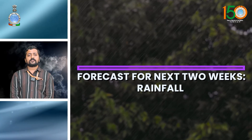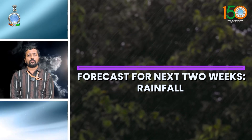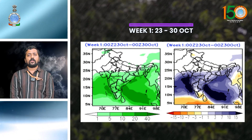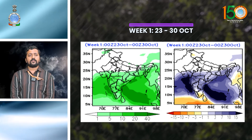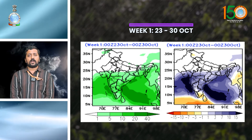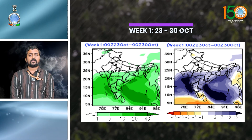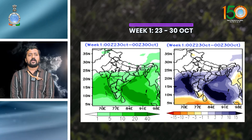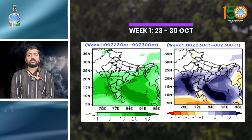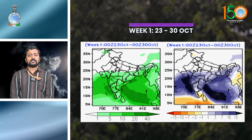Looking into the forecast from the extended range for the next two weeks, with respect to rainfall for week 1, enhanced rainfall activity is forecasted over the western coast of the country, Karnataka, West India, Central India, Andhra Pradesh, Telangana, and parts of Northeast India.